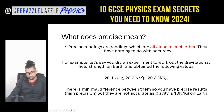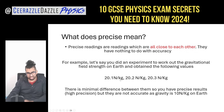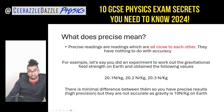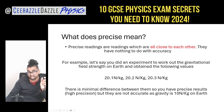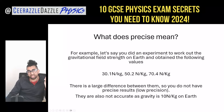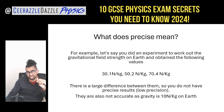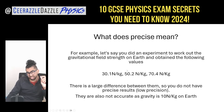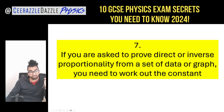Precision means readings that are close to each other. If you measured gravitational field strength as 20.1, 20.2, and 20.3, there is a small spread between the results, so they are high precision — but they are not accurate because they're not close to the expected value of 10. Contrast this with 30.1, 50.2, and 70.4 — a large spread — which is low precision, and also not accurate.